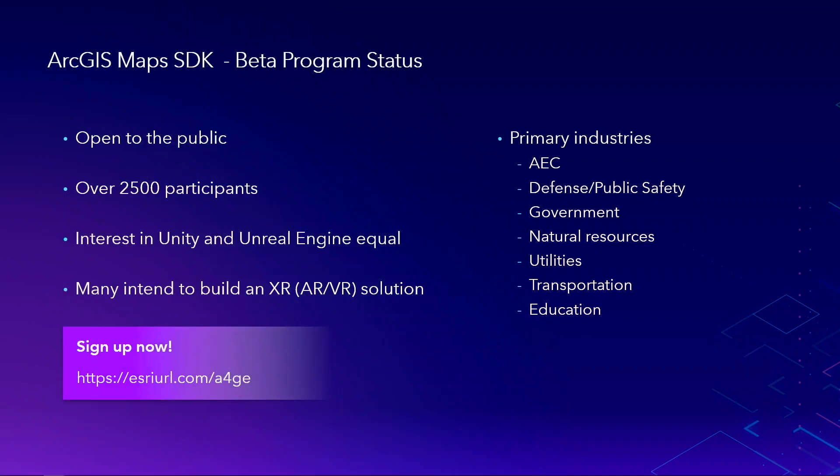The ArcGIS Maps SDK beta program has been open to the public for over a year now and it's been incredibly successful. Our second beta was released back in February. Currently we have over 2,500 participants, many actively engaged in the community prototyping solutions and providing feedback to our development team, and we've seen a few trends in the beta program over the last year.